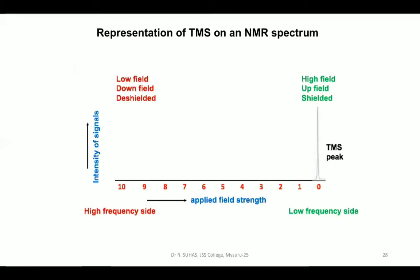TMS gives a sharp single peak in the NMR spectrum. An NMR spectrum is a graphical representation of chemical shift on the x-axis and intensity of signals on the y-axis. The TMS tetramethylsilane peak always appears at chemical shift 0, with notable intensity and sharpness. Since it gives a single signal, it is used as a reference standard — no other chemical shift value exists for TMS.